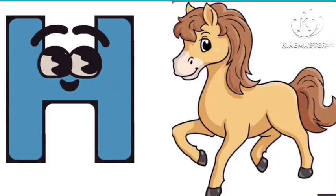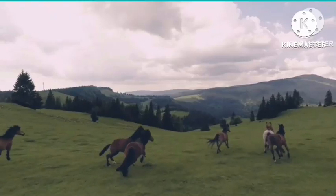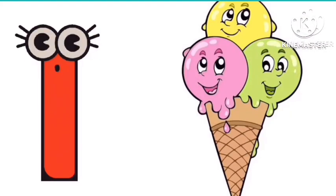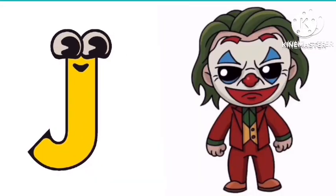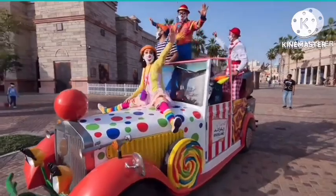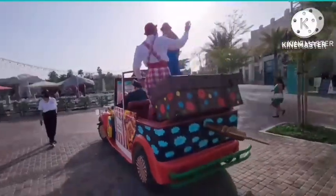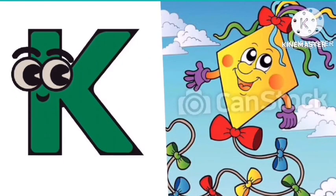H is for horse. I is for ice cream. J is for joker. K is for kite.